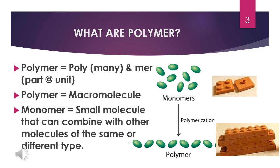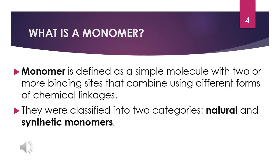They are built up from the repetition of small chemical units called monomers. A monomer is any molecule that can be converted to a polymer by polymerization or synthesization reaction with other molecules of the same or different type. You can imagine a monomer as a single leg block and a polymer as a leg of brick wall. A monomer is defined as a simple molecule with two or more binding sites that combine using different forms of chemical linkages.